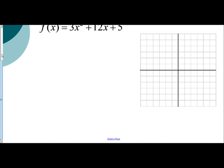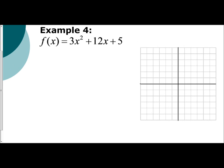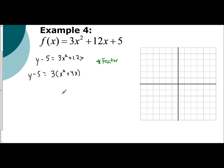So we'll look at one last example, putting everything together. We have 3x squared plus 12x plus 5. Isolate the quadratic and linear term by subtracting 5, so I have y minus 5 equals 3x squared plus 12x. I can't complete the square as is — I'm going to have to factor. I like to make a note of that because when I complete the square, I have to take that into account. So I'm going to factor out the 3.